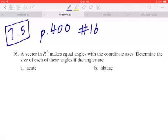Hi everyone, let's take a look at number 16 on page 400. A vector in three dimensional space makes equal angles with the coordinate axes. Determine the size of each of these angles if the angles are acute, obtuse.